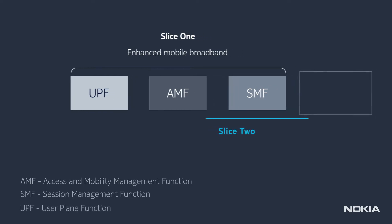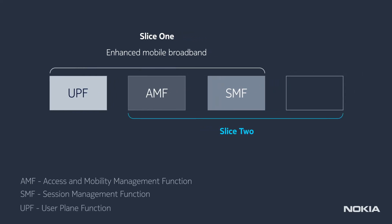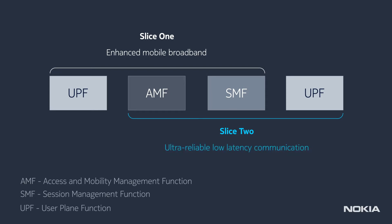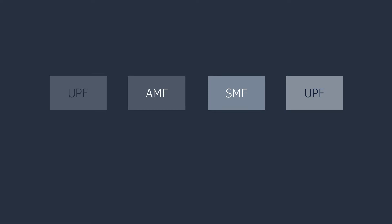The second core network slice fills the demand for an ultra-reliable, low-latency communication use case. This slice reuses two functions deployed for the creation of the first core network slice as shared components, and it requires the deployment of a dedicated User Plane Function.